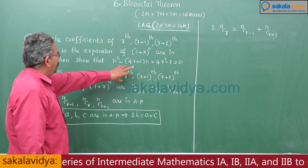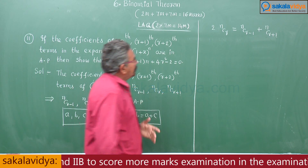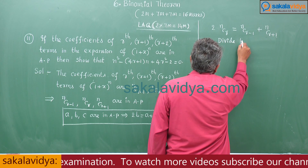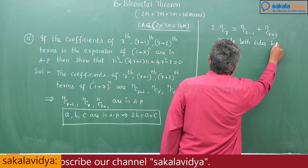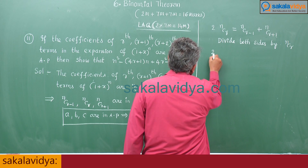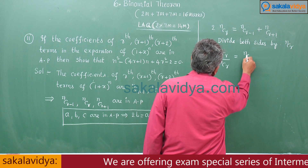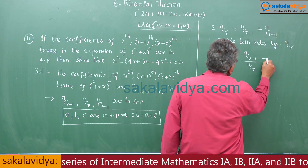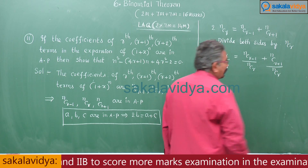We have to form a quadratic equation in terms of n. So we divide both sides by nCr: 2·nCr/nCr = nCr-1/nCr + nCr+1/nCr.